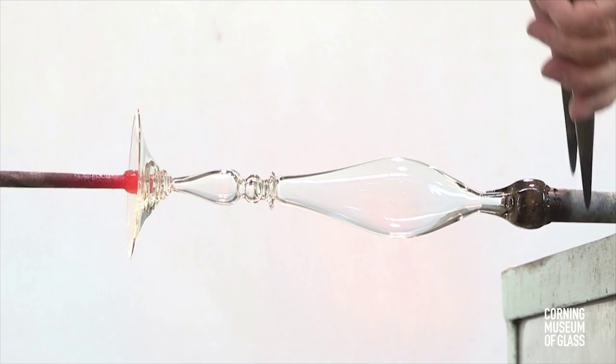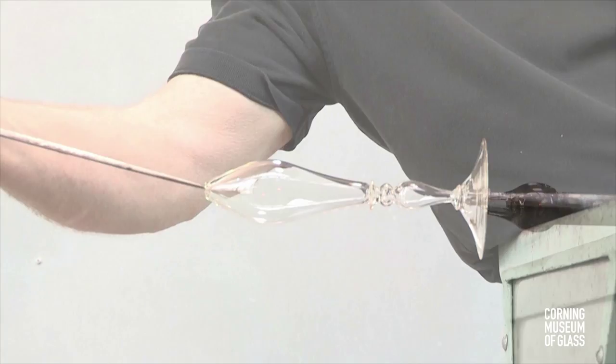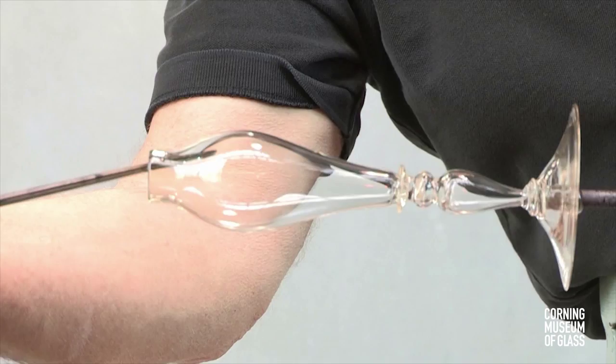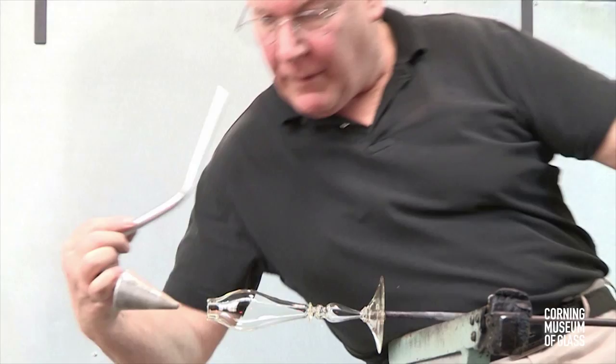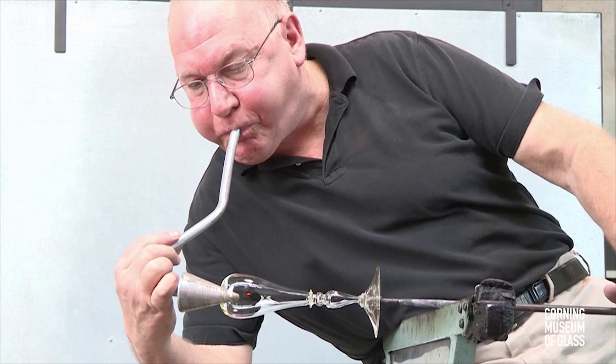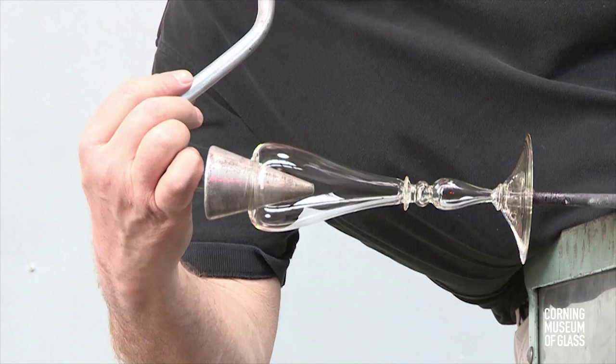After reheating, the opening process begins. The soffietta is used to inflate the glass, and the jacks are used to create the final curving profile.